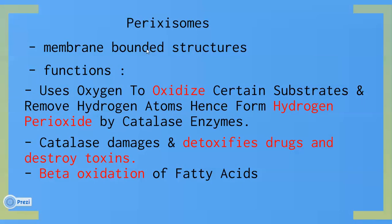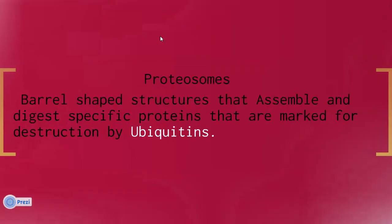Peroxisomes are membrane-bound structures. Their functions include: using oxygen to oxidize certain substrates, removing hydrogen atoms from hydrogen peroxide via catalase enzyme, detoxifying drugs and destroying toxins, and beta oxidation of fatty acids. Proteasomes are barrel-shaped structures that assemble and digest specific proteins marked for destruction by ubiquitin. When ubiquitin attaches to a protein, the proteasomes are activated.